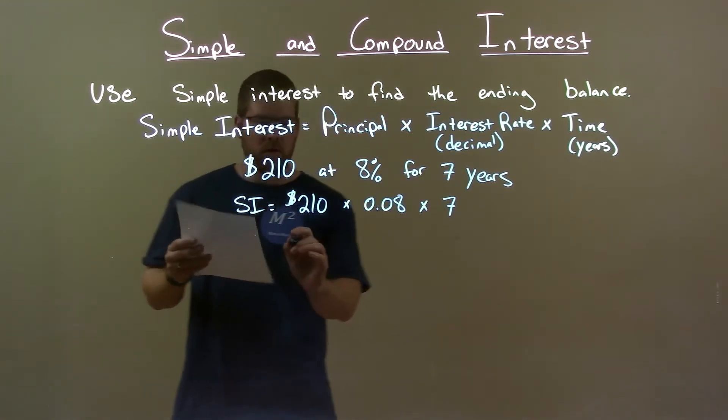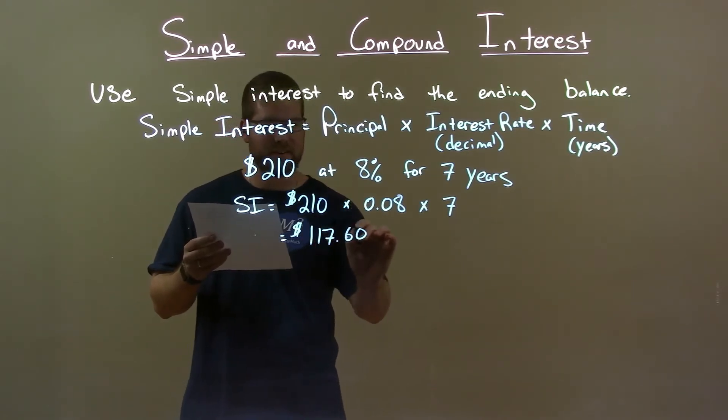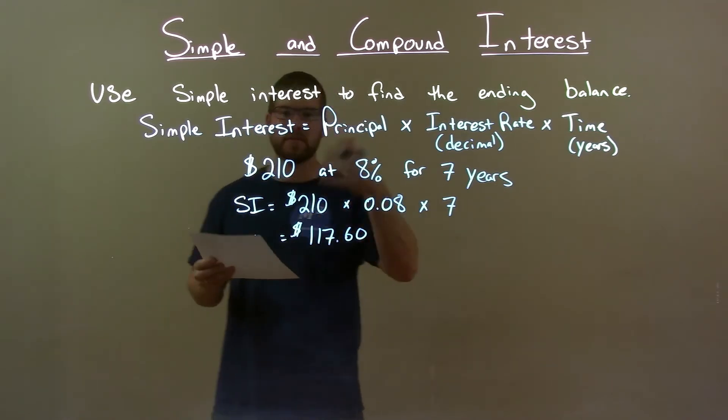When I multiply all that out, I get a value of $117.60. Now I have to add that to my principal to get the ending balance.